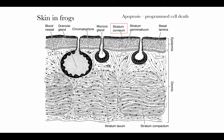Because amphibians exchange respiratory gases through the skin, the stratum corneum must be kept relatively thin. We also see in frogs other kinds of multicellular glands containing toxins, poisons, and protective chemicals, which can be stored in very large multicellular glands and deployed as needed.